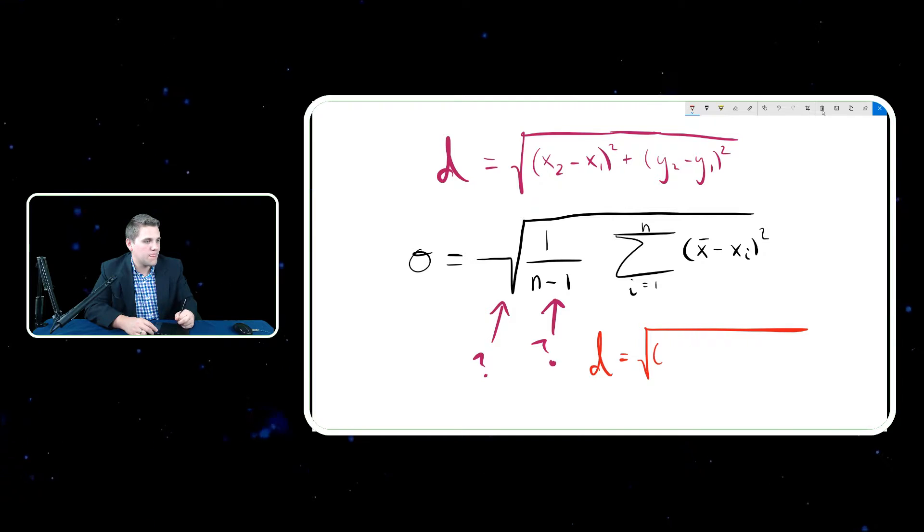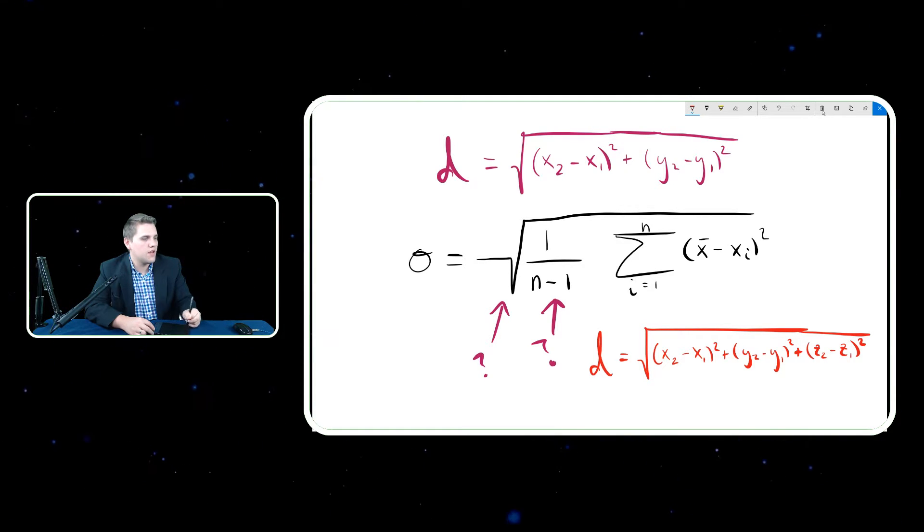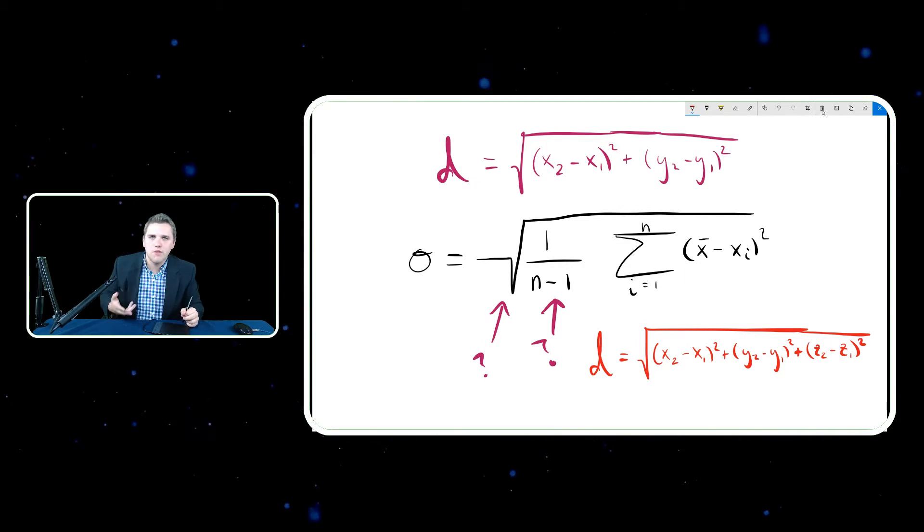If you wanted to find the distance between two points in three dimensions, it would actually be the square root of x2 minus x1 squared plus y2 minus y1 squared plus z2 minus z1 squared.